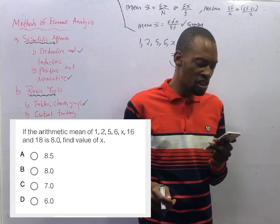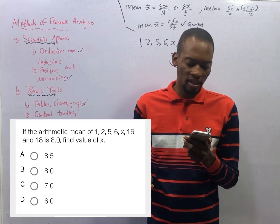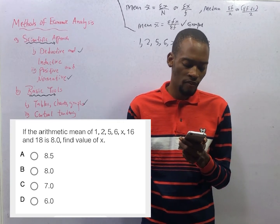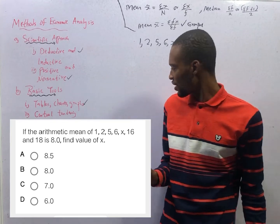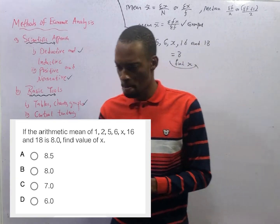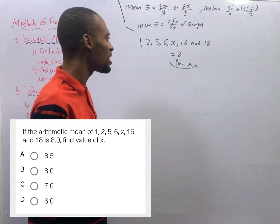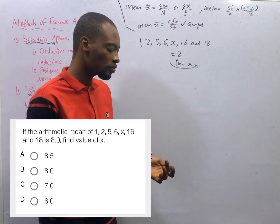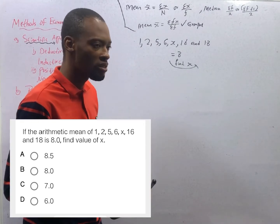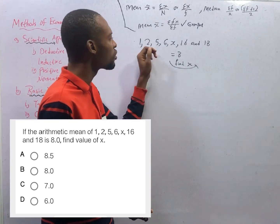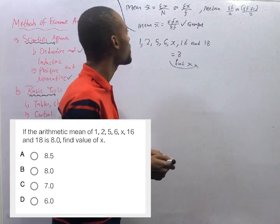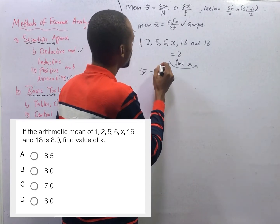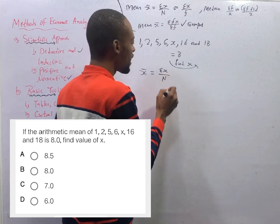If the arithmetic mean of 1, 2, 5, 6, S, 16, and 18 is 8, find the value of S. And mind you, it is 8, not 80 — take note of decimal points in questions. What is mean or arithmetic mean? This is ungrouped data, so arithmetic mean x̄ is equal to summation of x over N.